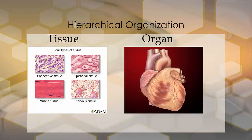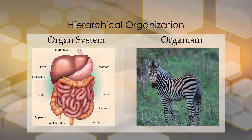Here are more examples of tissue and organs. There's a picture of a heart, and in your tissue, there are four different types shown. We'll discuss more types of tissues as we go further into biology. Here's the digestive system as our organ system, and a zebra as our organism.